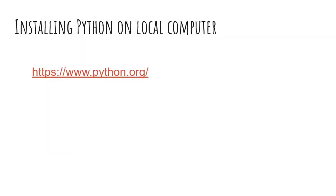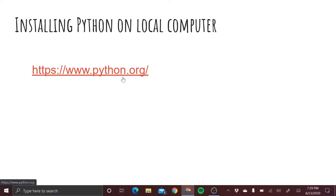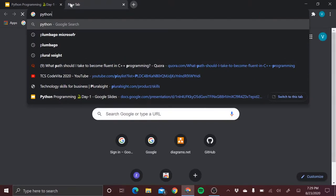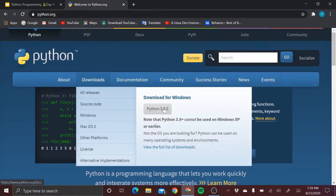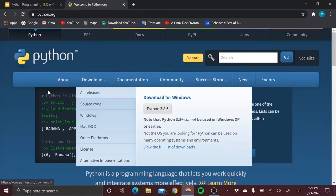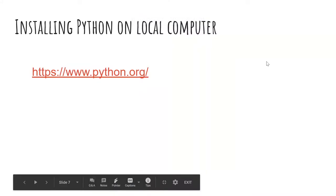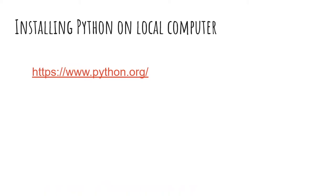Now let's get started on installing Python on your local computer. Go to python.org, go to the download section, and click — the latest version right now is 3.8.5. The file gets downloaded and you install the latest version. However, many people think installing Python uses hard disk space and may interrupt other programs.